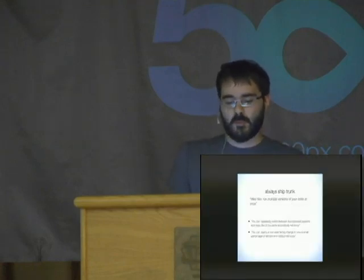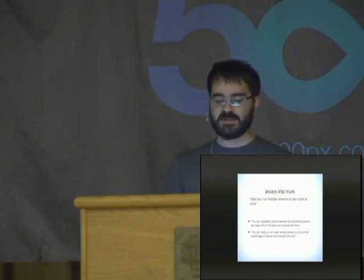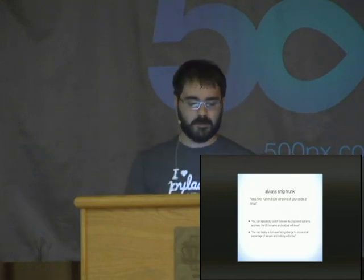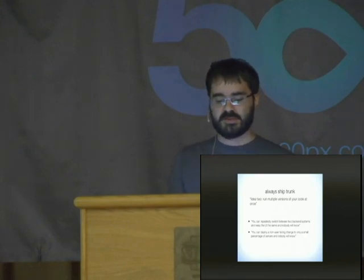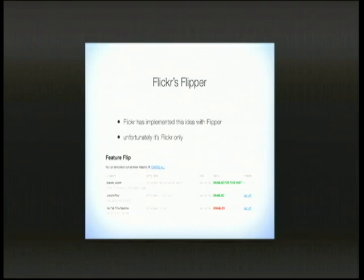His second idea is to run multiple versions of your code at once. You can repeatedly switch between two back-end systems and keep the UI the same and no one will ever know. Or you can deploy a non-user-facing change in only a small percentage of your servers. Flickr has a system like this called Flickr Flipper. You've got these features you can turn on and off, and in the client code you can respond to the value of those features.